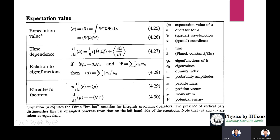For eigenvalues: A-hat psi_n equals a_n psi_n, where a_n is the eigenvalue and A-hat is the operator. The wave function can be written as a linear combination (superposition) of all psi_n: psi equals sum of c_n psi_n. The expectation value <A> equals the sum of |c_n|^2 a_n, where |c_n|^2 are the probability weights.